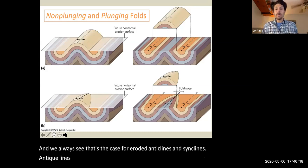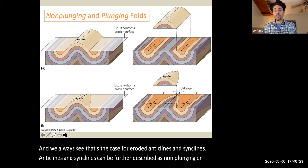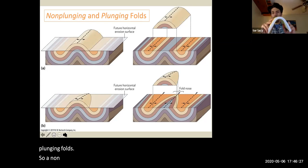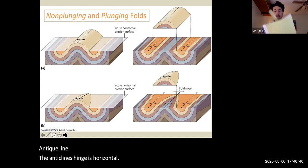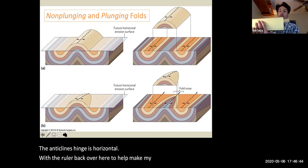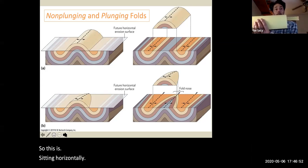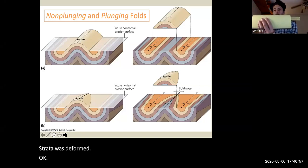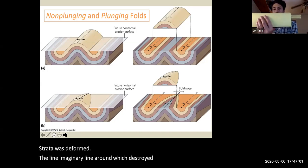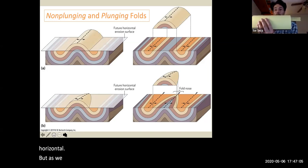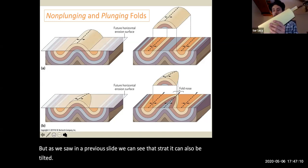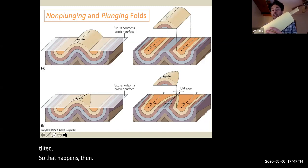Anticlines and synclines can be further described as non-plunging or plunging folds. So a non-plunging anticline would be one where the anticline's hinge is horizontal. So this is sitting horizontally. So as the strata was deformed, the imaginary line around which the strata was deformed remained horizontal. But as we saw in a previous slide, we can see that strata can also be tilted. So if that happens, then the fold is said to be plunging because the fold axis is plunging into the ground.